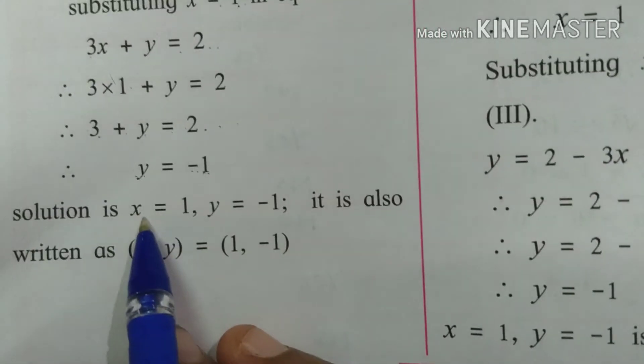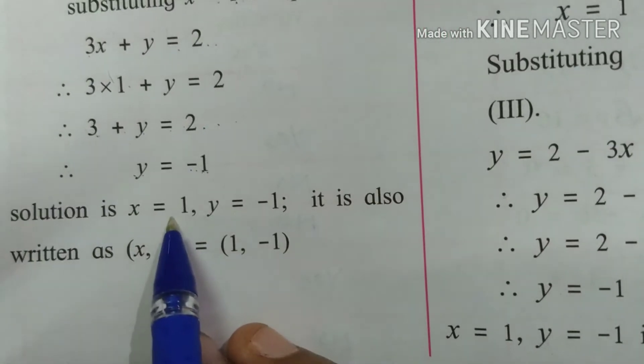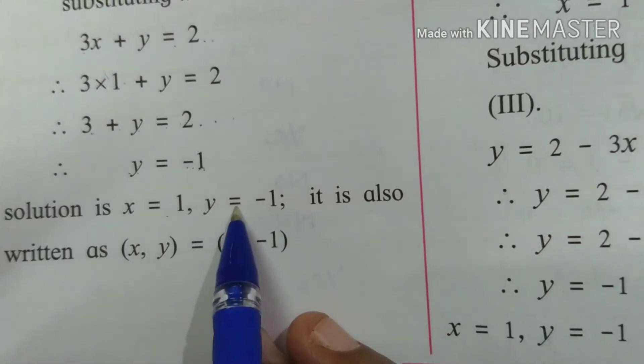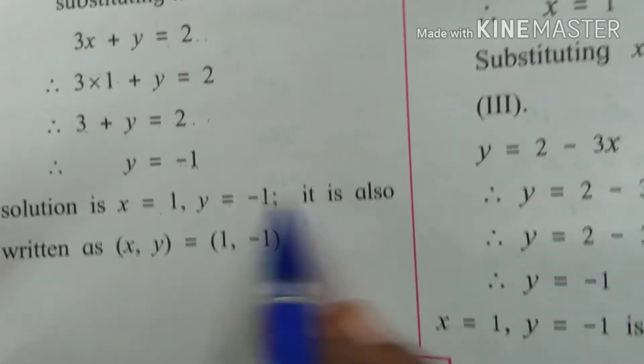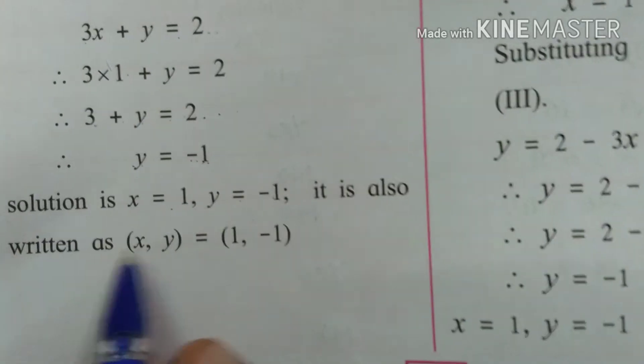Substituting x is equal to 1 in equation 2: 3x plus y equals 2 gives 3 plus y equals 2, so y equals minus 1. The solution is x is equal to 1, y is equal to minus 1.